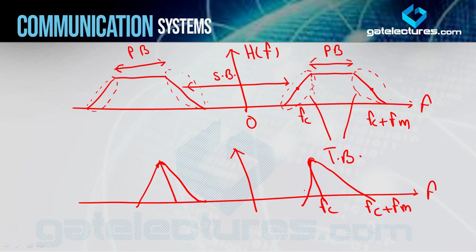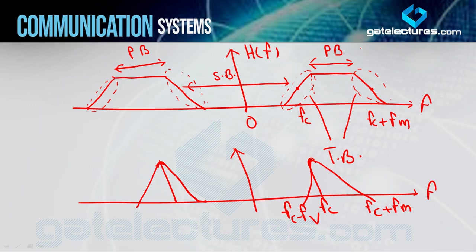Similarly, agar aap lower side band ko create karne jaate, toh vestige of upper side band create ho jaati. Toh yeh jo frequency hoti hai - jo extra frequency range hai - woh bahut hi small value hai. Toh yahan par main us range ko le raha hoon: FC minus FV, where FV is the very very small frequency. Toh jo FC minus FV hai aur FC hai, dono ke beech pe difference bahut hi kam hai. Aur yeh vestige kyun generate hui - because of the non-ideality of the filter. Aapka jo filter hai woh non-ideal hai, isme aapke transition band available hai. That's why aapki is tarah ki vestige generate hoti hai. Toh basically humne yahan par draw kar liya hai VSB ka spectrum. This is your VSB.